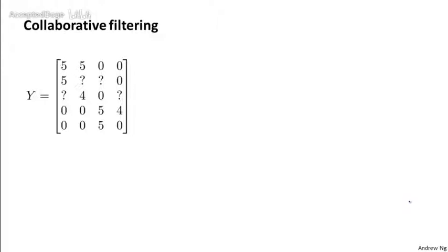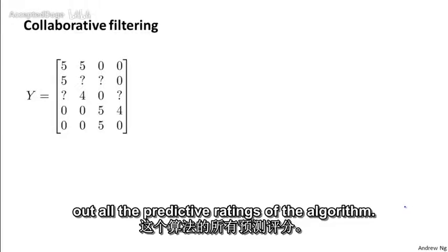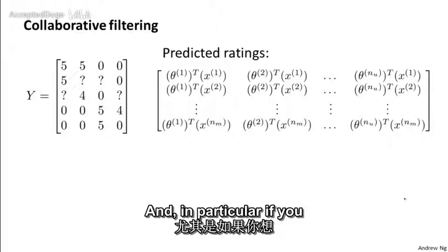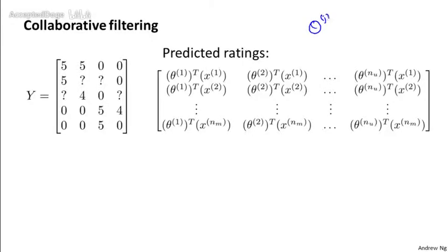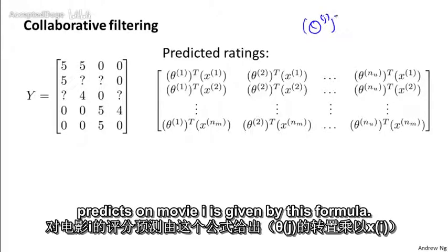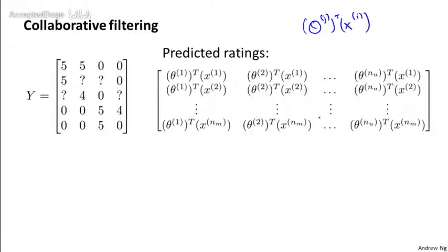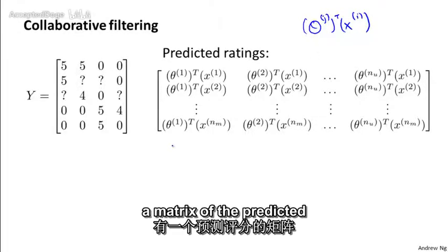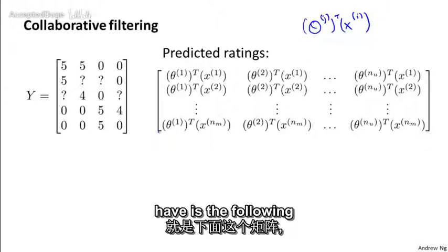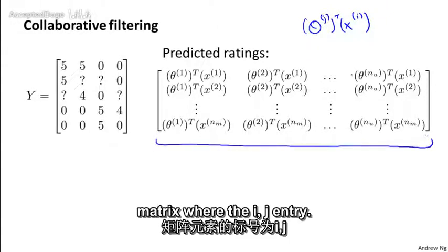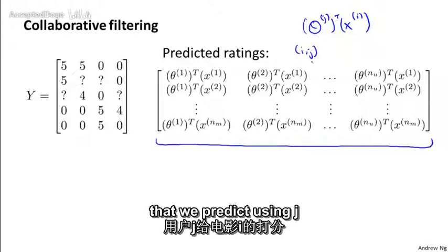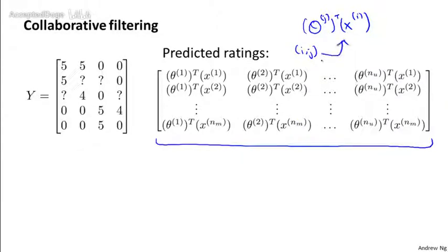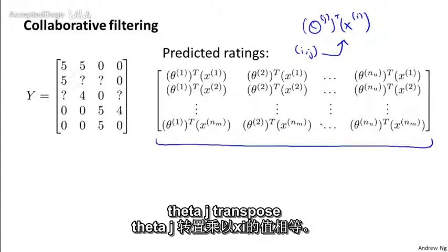And in particular, if you look at what a certain user predicts on a certain movie, what user j predicts on movie i is given by this formula. And so if you have a matrix of the predicted ratings, what you would have is the following matrix, where the i comma j entry, so this corresponds to the rating that we predict user j would give to movie i, is exactly equal to that theta j transpose x i.